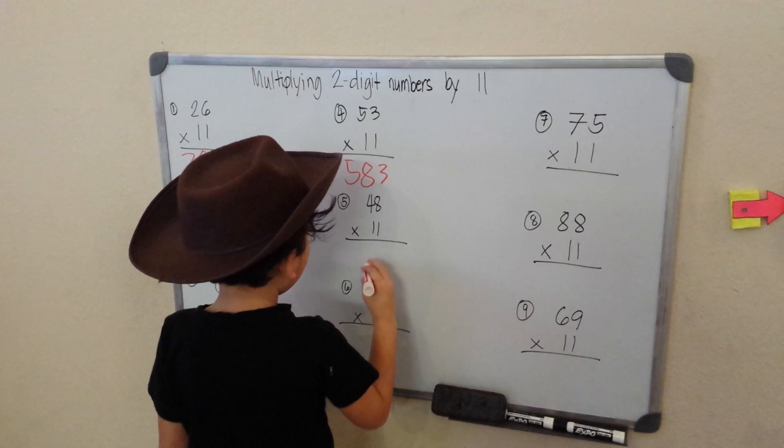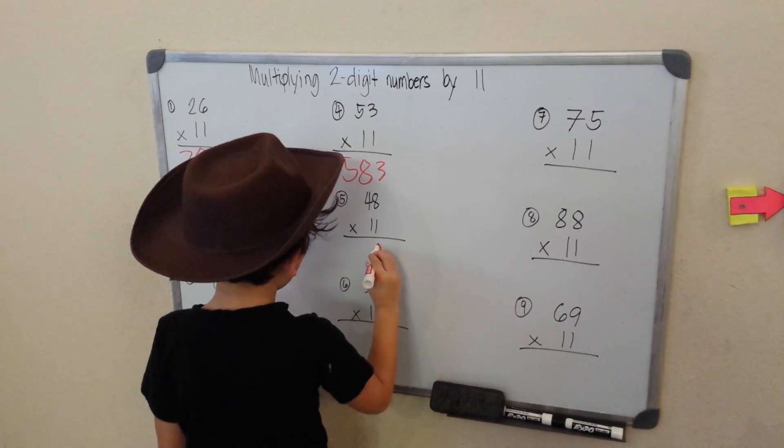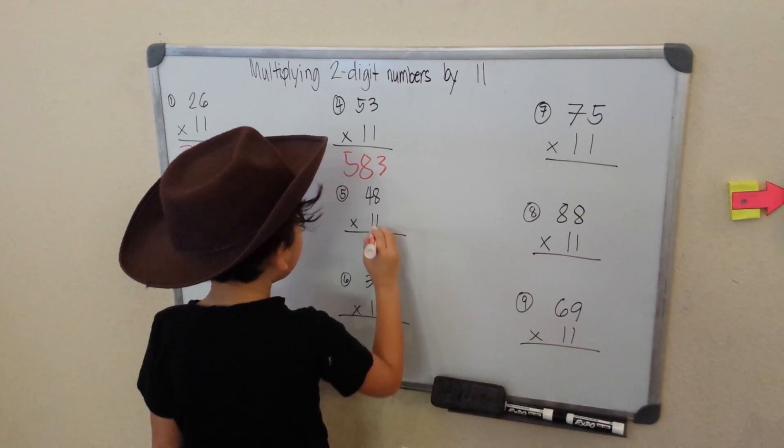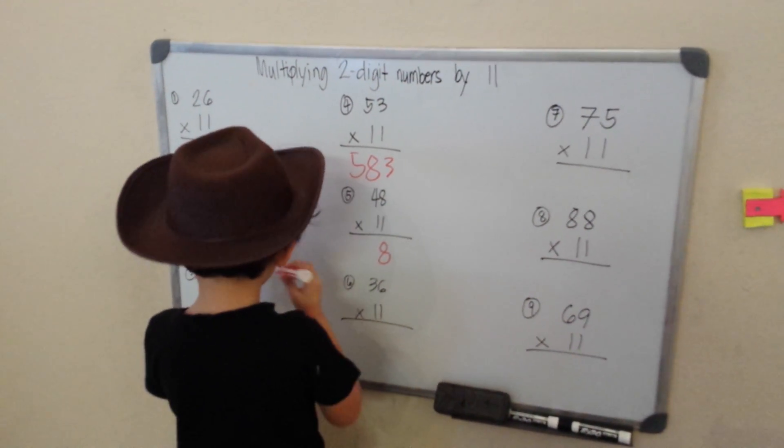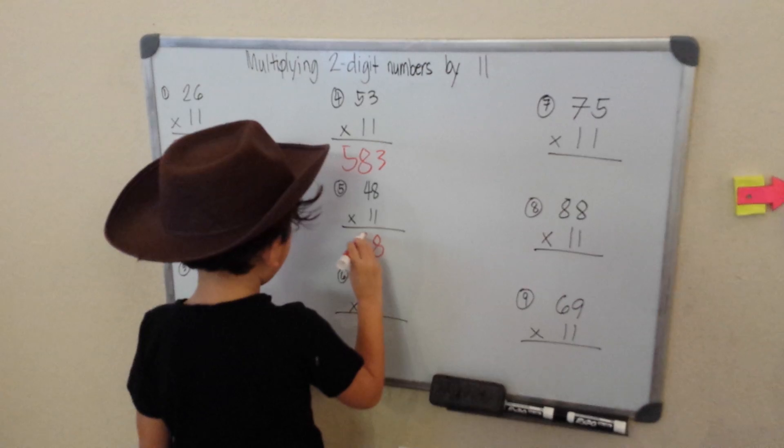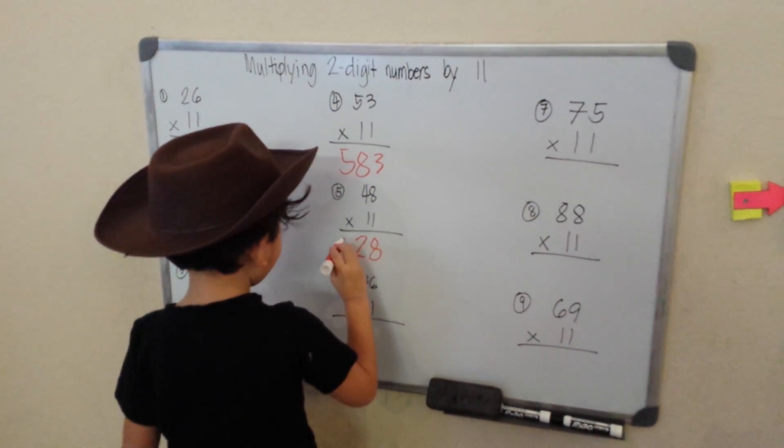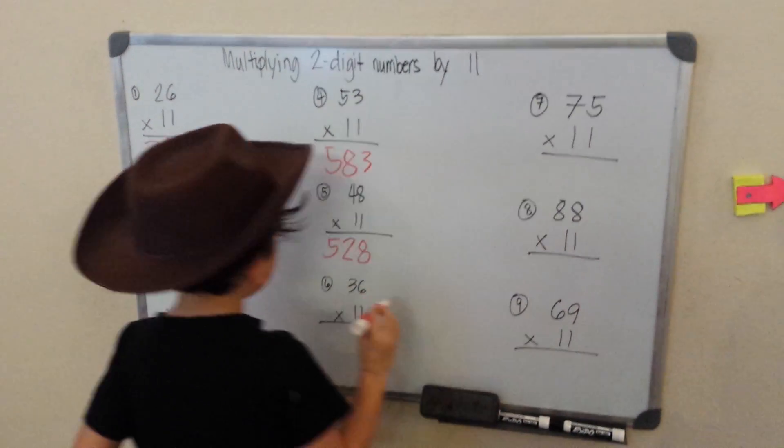48 times 11. 1 times 8 is 8. So copy the 8. 4 plus 8, that will be 12. Carry 1. 1 plus 4, that makes 5. 528.